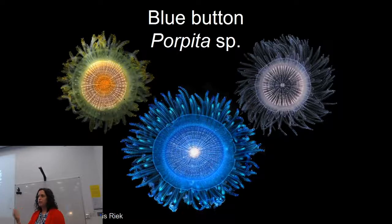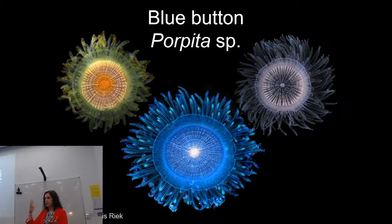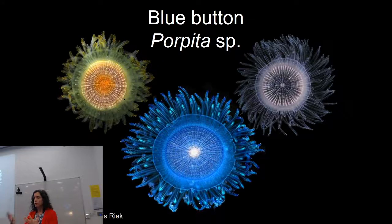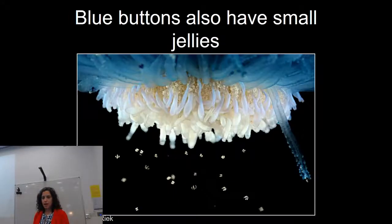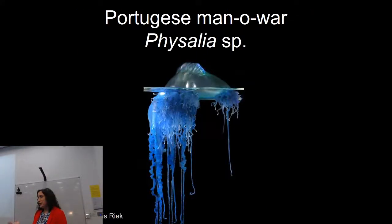Blue buttons are relatives of Valella with a very similar life cycle and similar predators, but they don't have the sail. Some of my research this year suggests blue buttons are much more restricted in distribution than Valella, probably because of that difference in windage — how much an organism sticks up from the ocean surface changes how it's impacted by currents or wind. They also produce little jellies, but what happens to those is unknown.